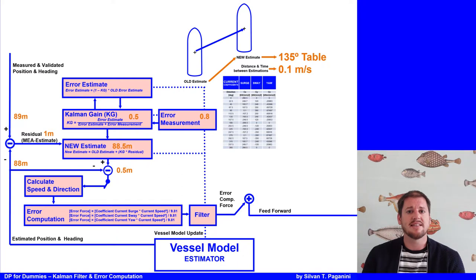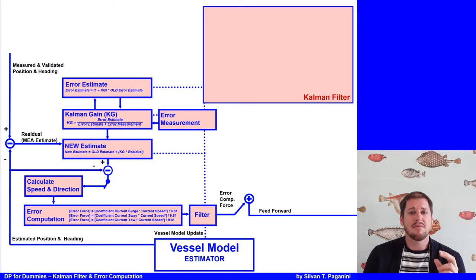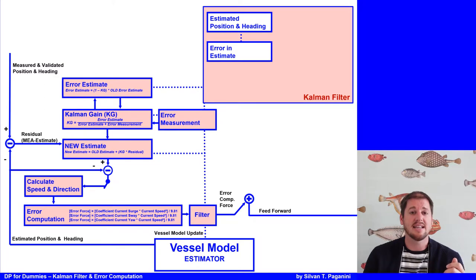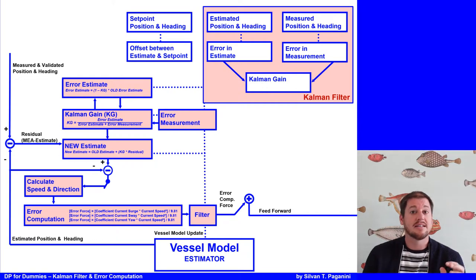If you look closer, what the DP system is doing with the data from the position reference system and the estimate in the Kalman filter, something is completely ignored. And what's that? Let's see what data the Kalman filter is using. That's the estimated position and heading with the error in the estimate, and the measured position and heading with the error in the measurements. With both errors in the estimate and measurements, the Kalman gain is calculated. Now, may you already saw it. The setpoint of the position and heading input from the dynamic positioning operator, and therefore the offset between the estimate and the setpoint, is completely ignored. The Kalman filtering is only looking at the estimate and the measurements, and not at the setpoints. For that, the controller will take care of the setpoint and offset. See the lecture about the controller if you're interested in it.